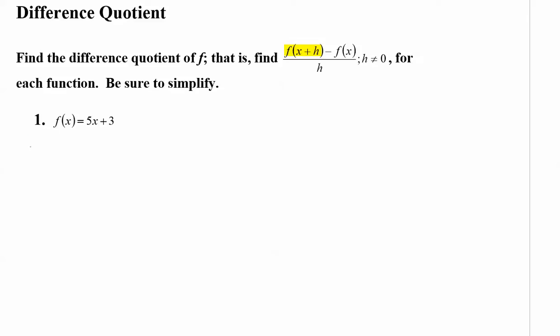First, f of x plus h means change all of the x's in f to x plus h groups. So instead of 5 times x plus 3, we get 5 times what plus 3? 5 times x plus h plus 3.